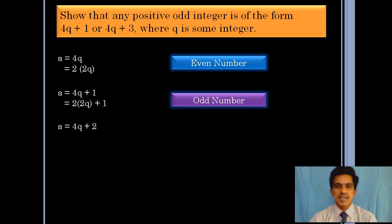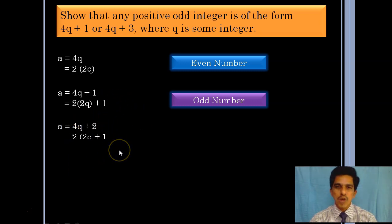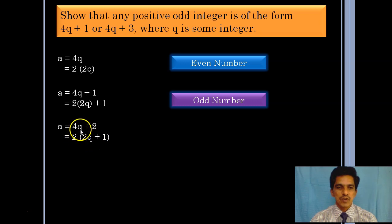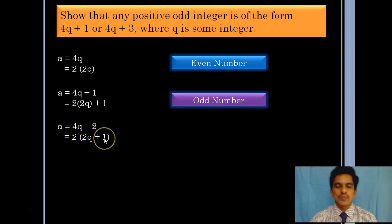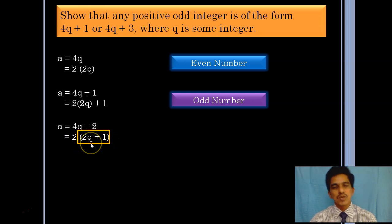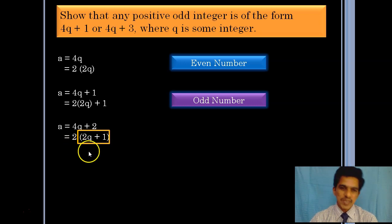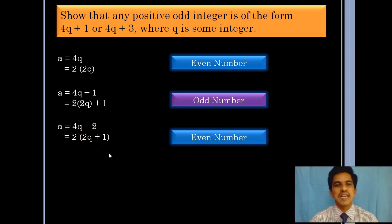Let us take the next case: a is equal to 4q plus 2. If you observe, from both 4q and 2, we can take 2 as a common factor. Taking 2 out, we get 2 times (2q plus 1). Since this is 2 into some integer, the number 4q plus 2 is an even number.